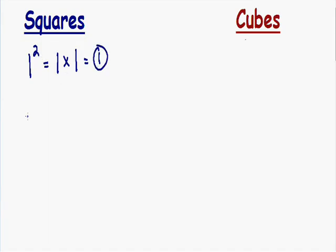Let's go over another example. Let's say we had 2 squared. That means we multiply the number 2 by itself 2 times. 2 times 2 is equal to 4, so 2 squared is equal to 4.